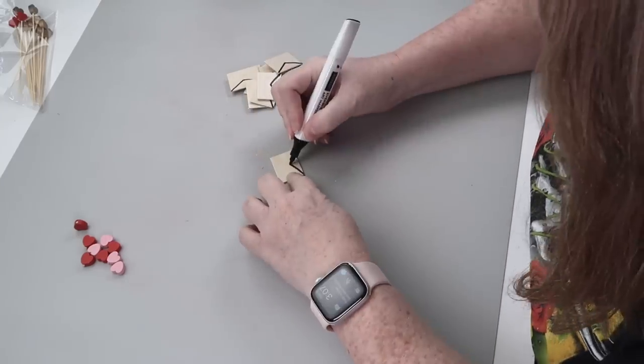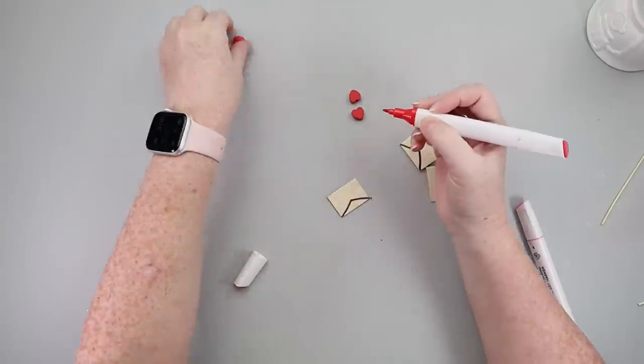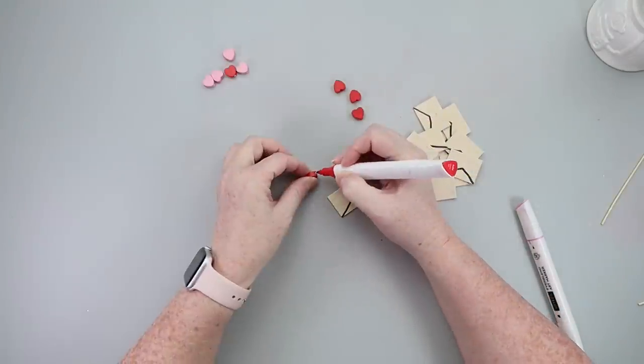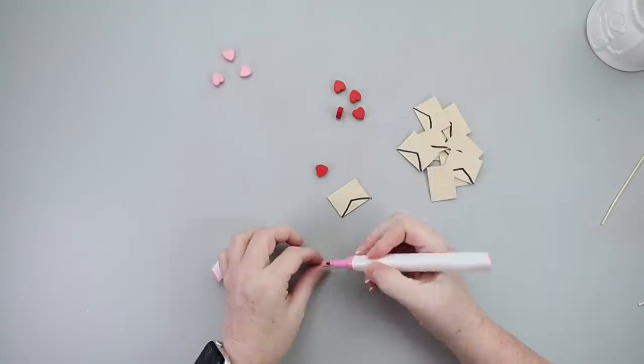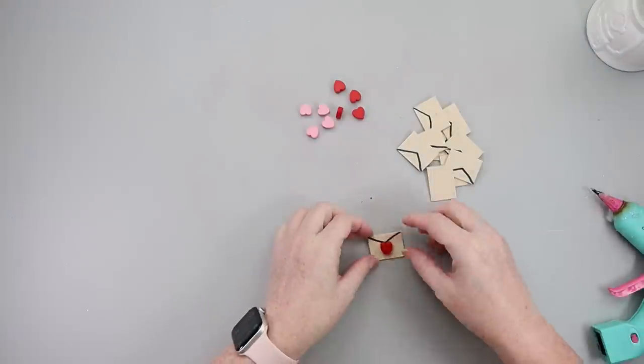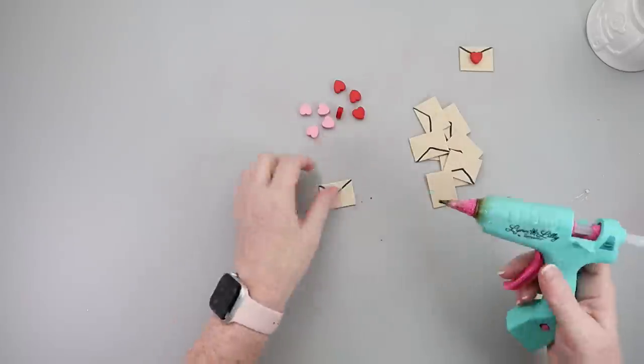Then with the wooden hearts where I snipped the skewers off, you could kind of see little pieces of wood. So again, I'm taking those acrylic markers and just coloring it with a little bit of red or pink. You could just paint here as well, just as a fine little detail that I wanted to do. The final step here is just to take these wooden hearts and hot glue them down onto the wooden envelopes.